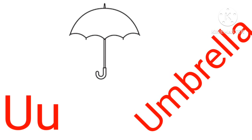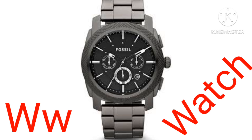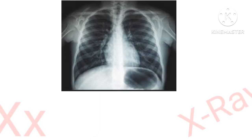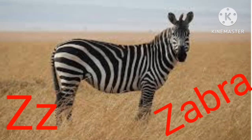U for Umbrella. V for Van. W for Watch. X for X-Ray. Y for York. Z for Zebra.